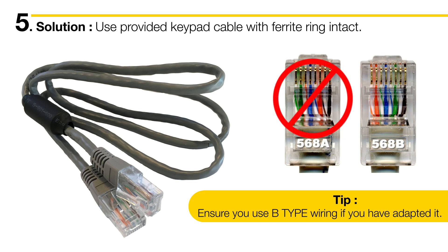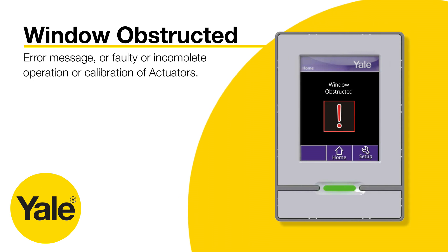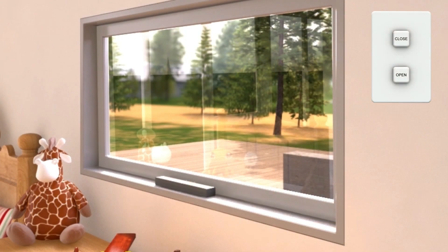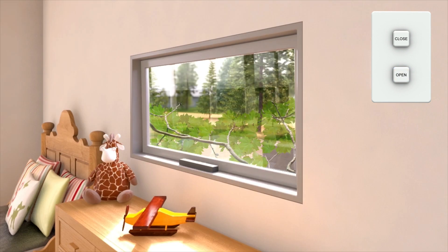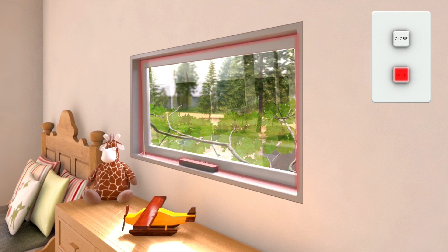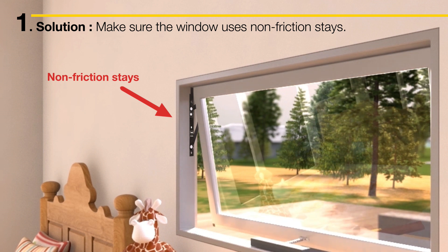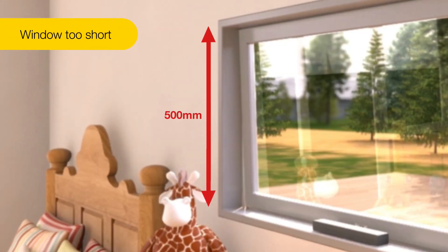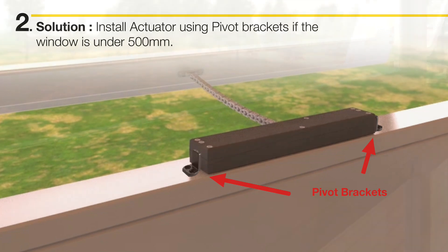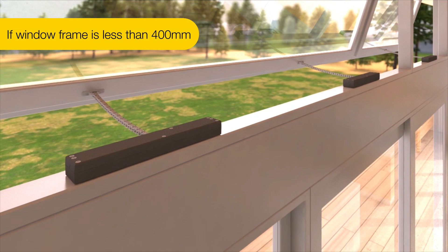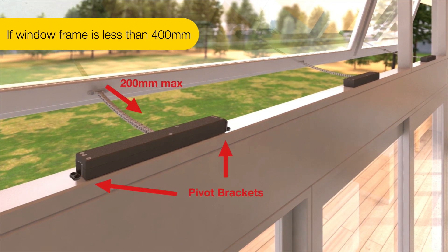Now that we've covered common communication error causes, we'll move on to what can cause a window obstructed error to appear on the keypad. Or, if you're using a wall switch or smart home system instead of a keypad, you may find the actuators start to move but stop short of full stroke and won't complete the initial calibration sequence. This error means the motor is struggling to open or close the window. Check for obstructions first, and check the windows are using non-friction stays. It could also be that the window is too short for the chain stroke. If the window sash is shorter than 500 millimetres, the actuator must be installed using the pivot brackets. If the window sash is shorter than 400 millimetres, you must use the pivot brackets and also restrict the stroke of the chain to 200 millimetres.